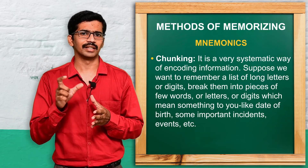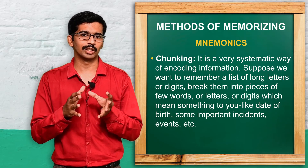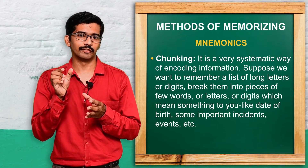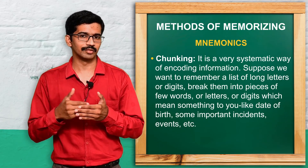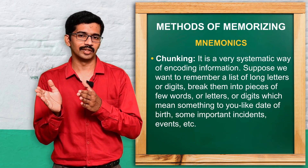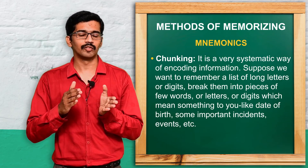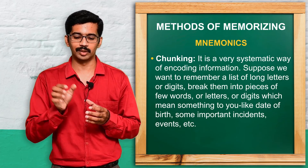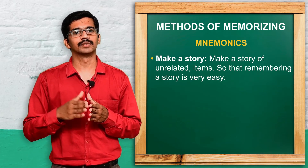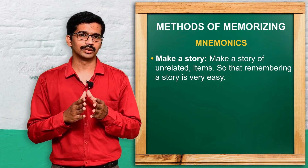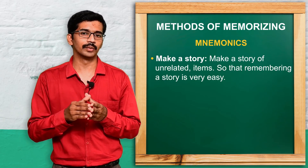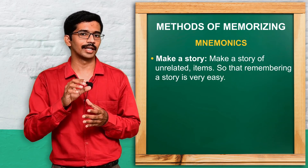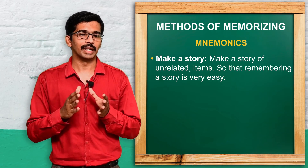The next one is chunking. Chunking is nothing but long names or long numbers will be broken up and related to our life situation to be remembered. For example, if it is a long number, we may relate it to our phone number or our date of birth — making small chunks. That is the chunking method. Next one: make a story. Certain unrelated things we want to remember — what we do is make those unrelated things into a related story. That is making a story.